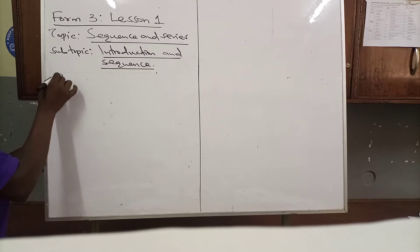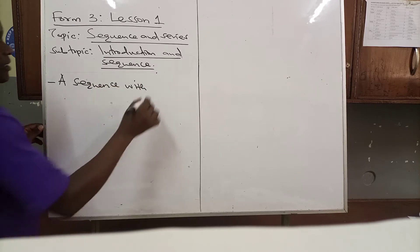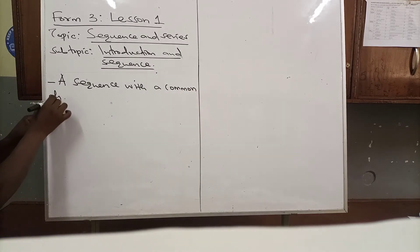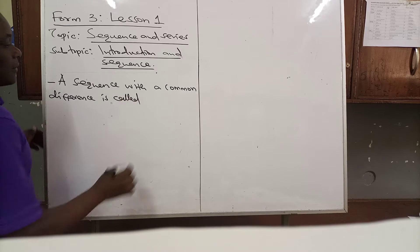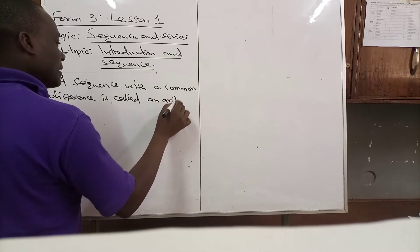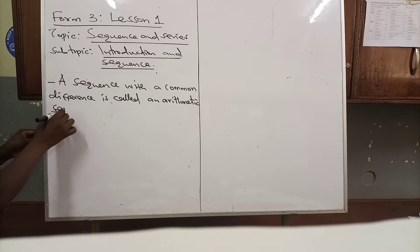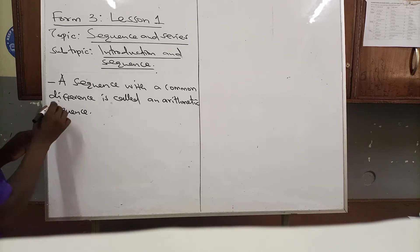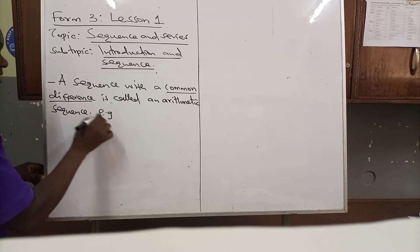We will start by defining what a sequence is. A sequence with a common difference is called an arithmetic sequence. So an arithmetic sequence is a sequence with a common difference. What do we mean by the word common difference? I will give you an example.